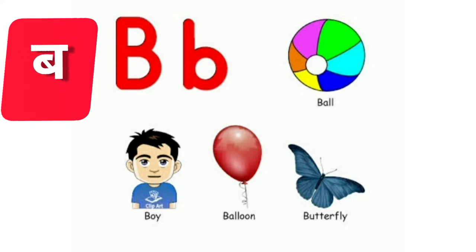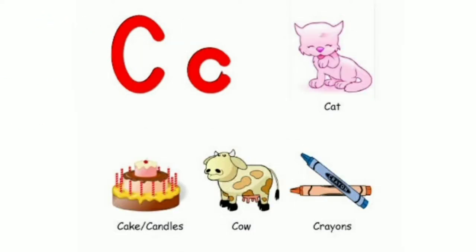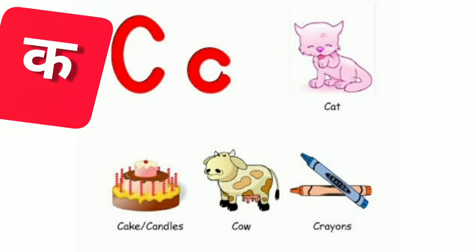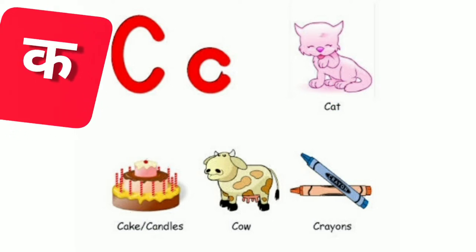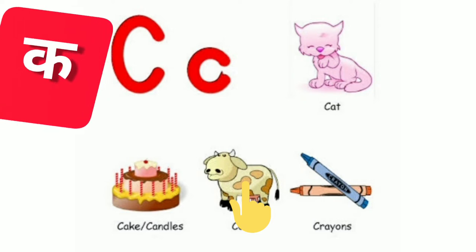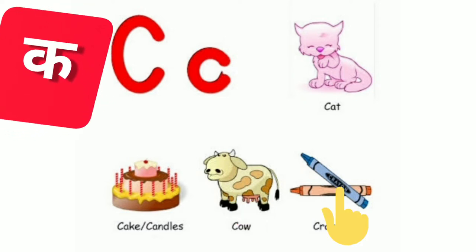It's clear? The next is C. The C sound is K. Cat. Cakes. Candles. Cow. Crayons.